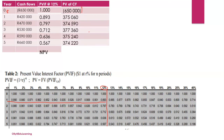Once you have calculated all present values, add them all together. Remember the first one is negative, so include it as a negative — alternatively, add all the positive present values first and then subtract the R650,000 initial investment. Doing this gives an NPV of R1,226,470.